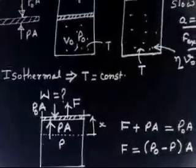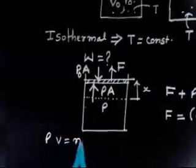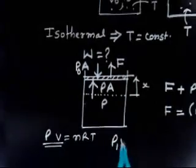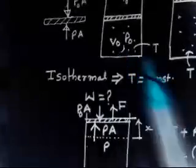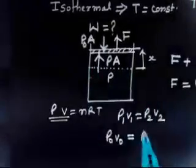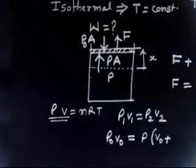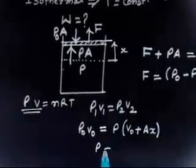Now, if somehow I can find P in terms of x, the job is done. Since the process is isothermal, I can apply P1V1 = P2V2. Initial pressure is P0, initial volume is V0. If the piston moves by distance x, the new volume is V0 plus Ax. So P = P0·V0 divided by (V0 + Ax).